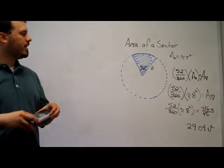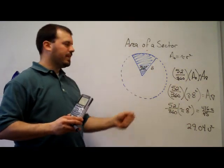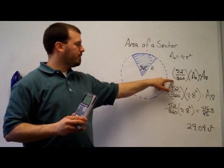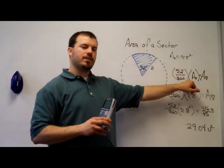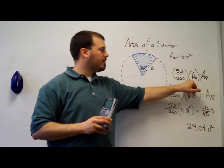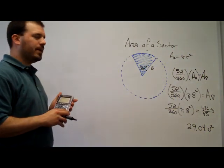So to find the area of a sector, we take the fraction of the area, and that fraction is found by the central angle of the sector over 360. Very similar to finding the length of an arc, the only difference is, instead of multiplying by circumference for length of an arc, you multiply by the area of the circle for area of a sector. And that's how you find the area of a sector.